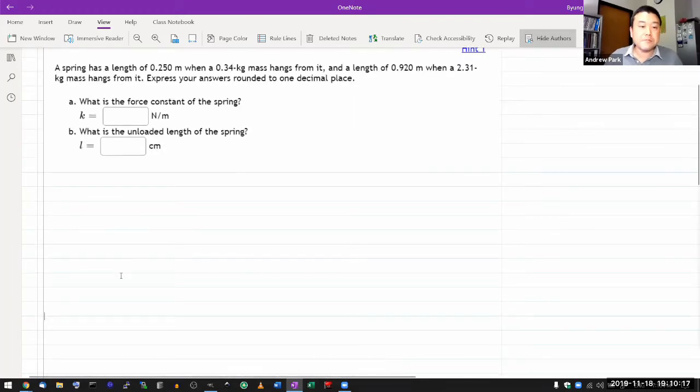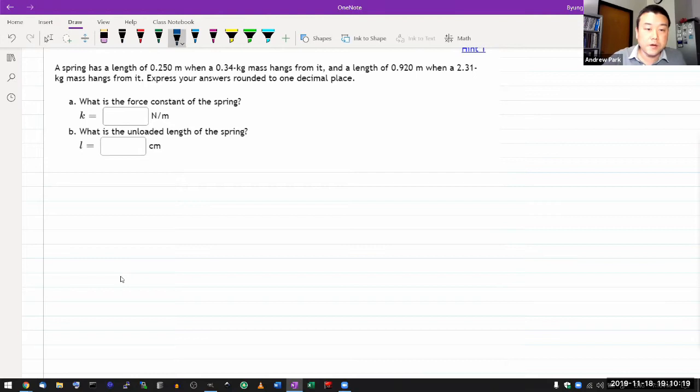Let's get started. It says a spring has a length of 0.25 meters, so that's what's important for me. It has some length L1 when a mass M1 hangs from it, and a length of L2 when a mass M2 hangs from it.